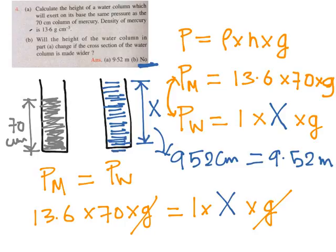If you make it broader, even if we increase the base of that particular vessel, we require more volume of water to reach 952 centimeters or 9.52 meters. The answer to the second part is no, it doesn't depend upon the cross section; it only depends upon the height of the water column.